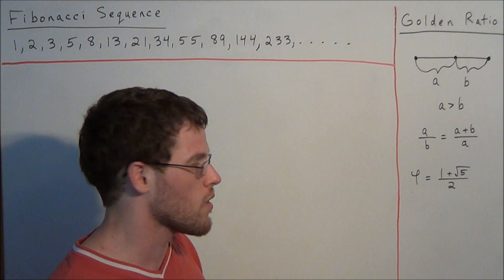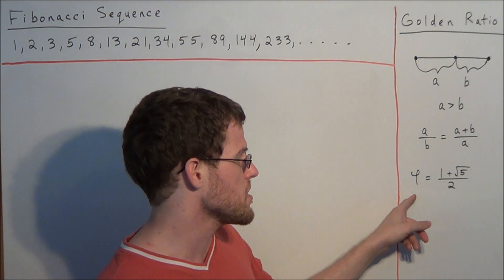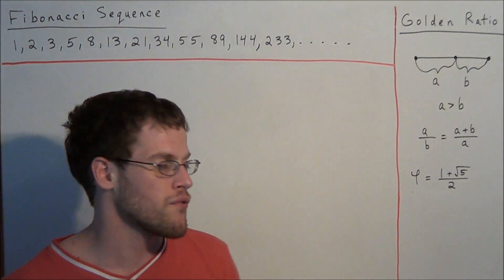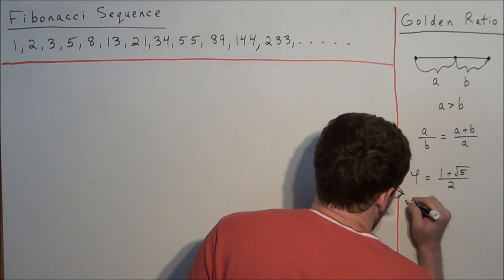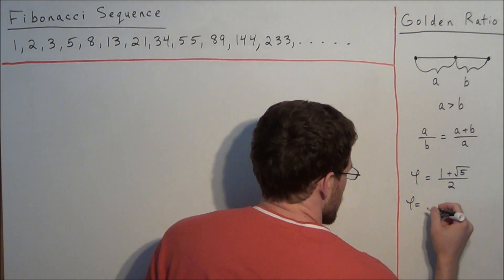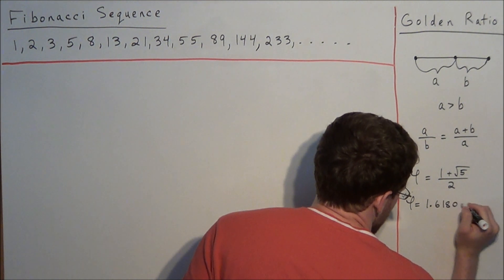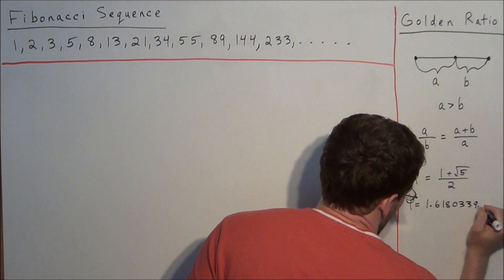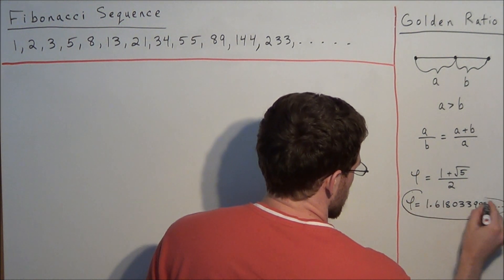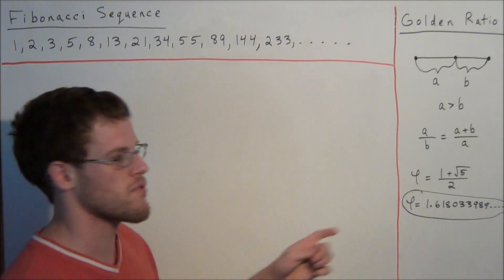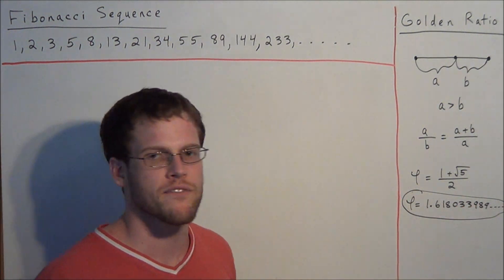In the previous video, I solved for the golden ratio, and we found phi to be equal to 1 plus the square root of 5, divided by 2. If we express this as a real number, the golden ratio phi equals 1.618033989, and this number continues forever because it is irrational. For this video, all we care about are the first few digits after the decimal place.